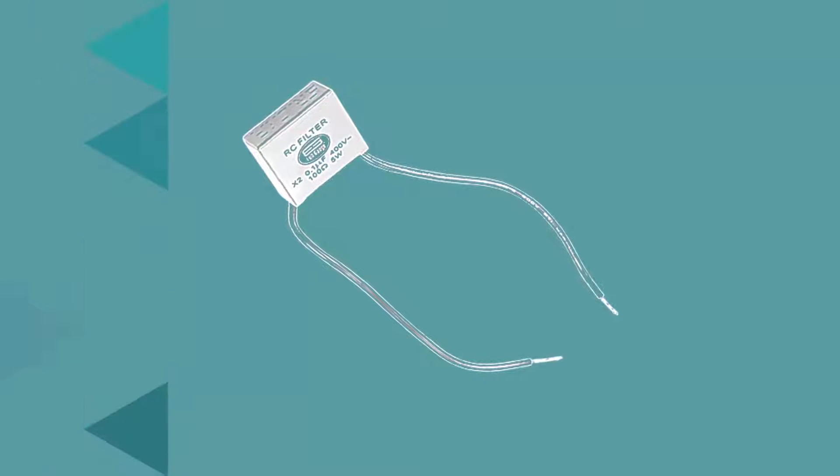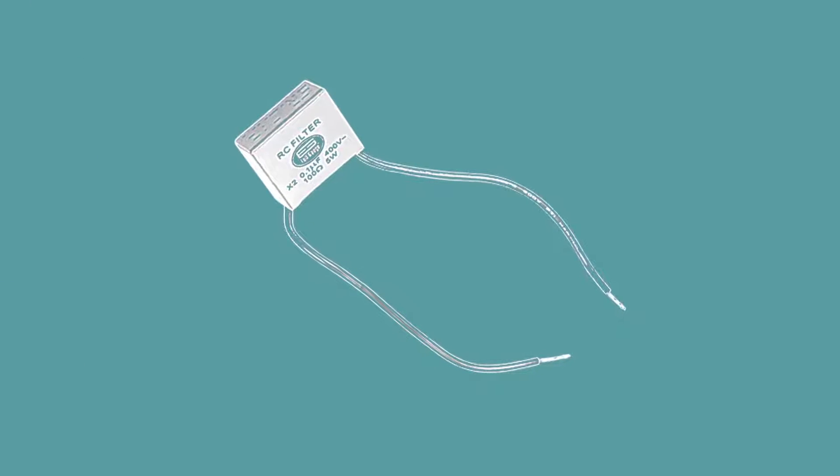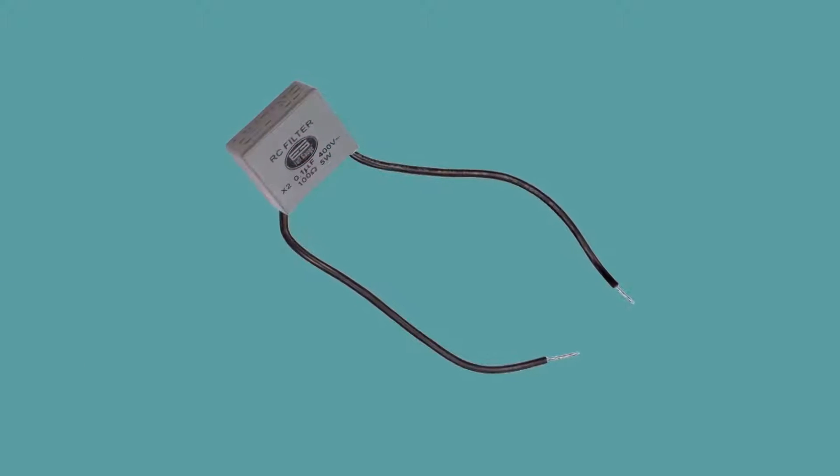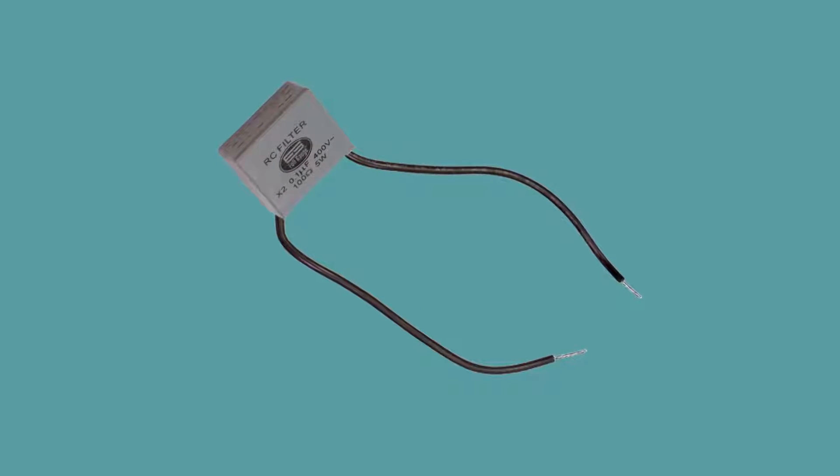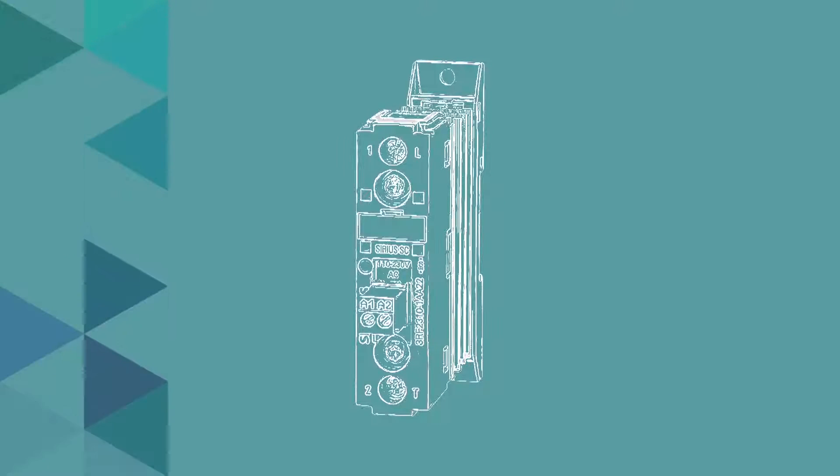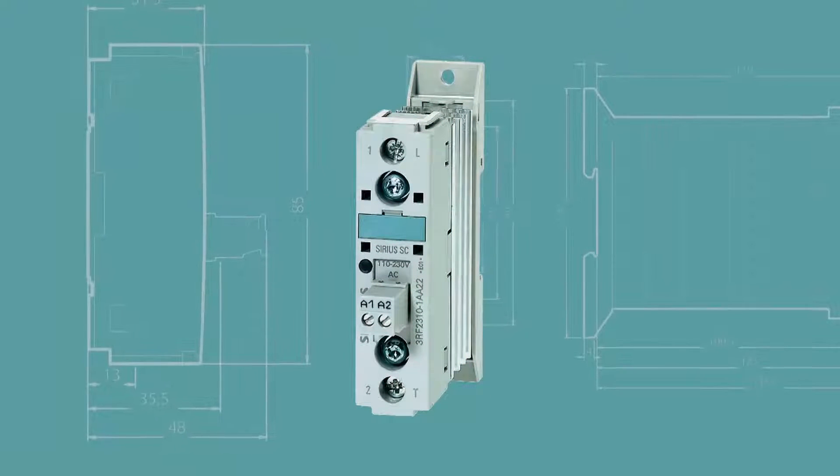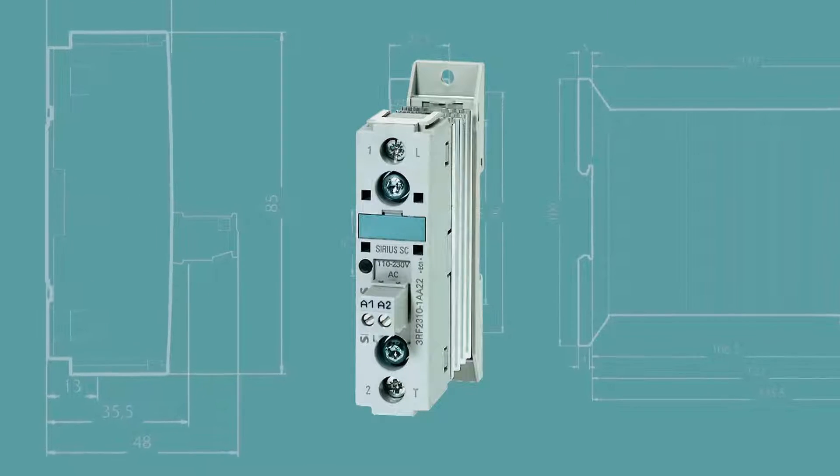Important! According to international standards, we recommend installing an RC type transient suppressor filter in all facilities, regardless of power. For loads of greater than 2 horsepower, use a contact switch of suitable capacity. The RC filter and the contact switch do not come with the product.